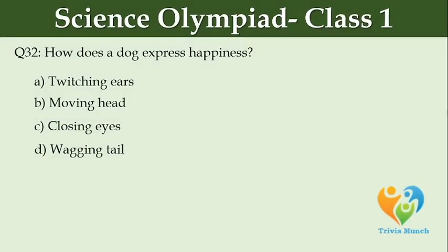How does a dog express happiness? Option A: Twitching ears. Option B: Moving head. Option C: Closing eyes. Option D: Wagging tail.